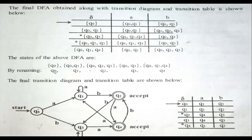After renaming, Q0 is named Q0 itself. {Q0, Q1} is named Q1. {Q0, Q2, Q3} is named Q2. The remaining states are named Q3 and Q4 accordingly. With this naming, we generate the proper transition table.